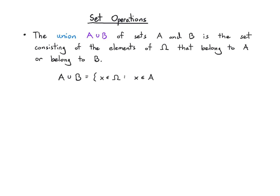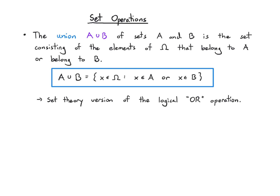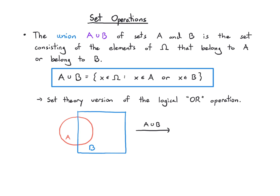In set builder notation, I write: X is an element of A or an element of B. The set theory version of this is a logical OR. As a Venn diagram, we can visualize this as a circle and a square overlapping in part — when I take the union, I get this combined shape representing all the elements.